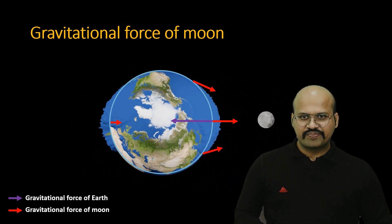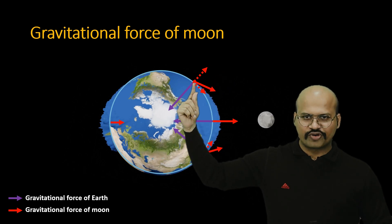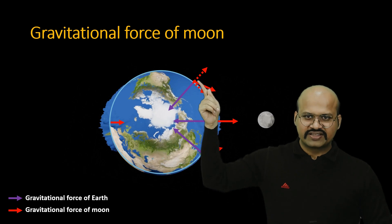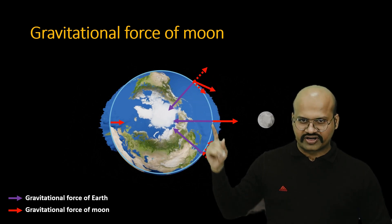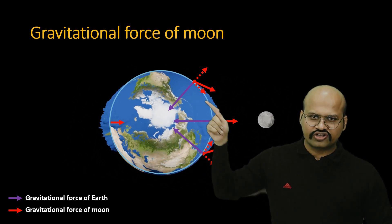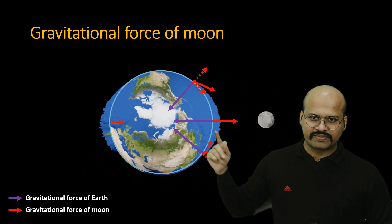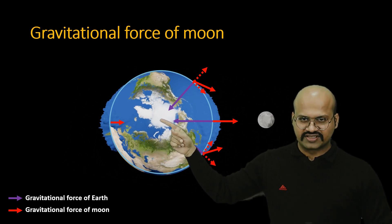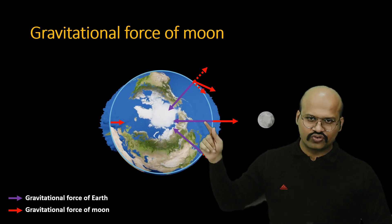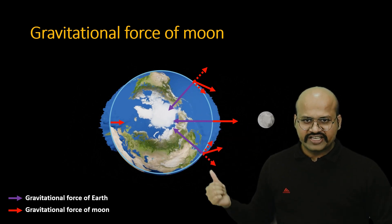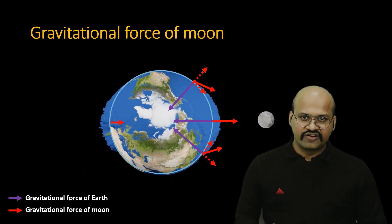Instead, the gravitational pull of the moon on the sides of the earth and at higher latitudes is inclined. This inclined force can be divided into two components: one perpendicular to the surface of earth and one parallel to the surface. The vertical component is cancelled by the earth's gravity and creates no movement. However, the horizontal component is not cancelled, so water from the sides and higher latitudes is accumulated towards the point facing the moon. It is this horizontal component of the moon's gravitational field that creates the tidal bulge on the moon-facing side.